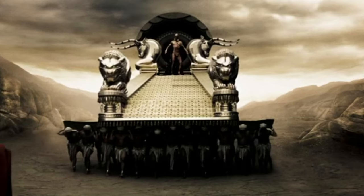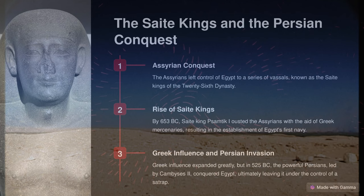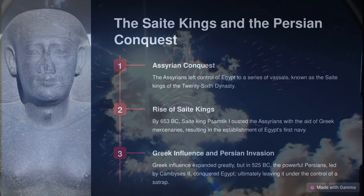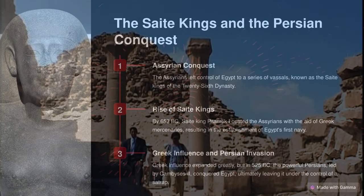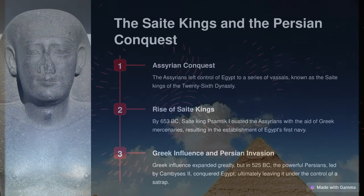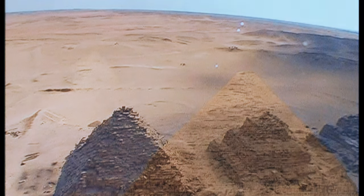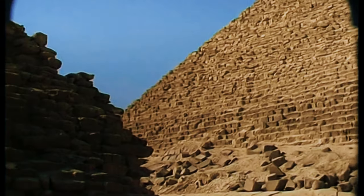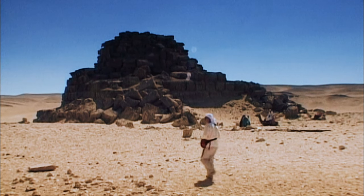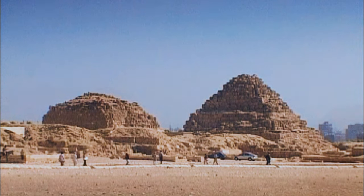Following its annexation by Persia, Egypt was joined with Cyprus and Phoenicia in the sixth satrapy of the Achaemenid Persian Empire. This first period of Persian rule over Egypt, also known as the 27th dynasty, ended in 402 BC, when Egypt regained independence under a series of native dynasties. The last of these dynasties, the 30th, proved to be the last native royal house of ancient Egypt, ending with the kingship of Nectanebo II. A brief restoration of Persian rule, sometimes known as the 31st dynasty, began in 343 BC. But shortly after, in 332 BC, the Persian ruler Mazaces handed Egypt over to Alexander the Great without a fight.